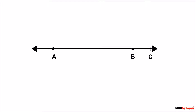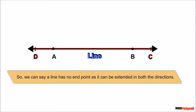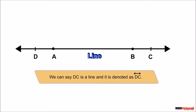Now if we extend the line indefinitely from a point in the opposite direction, we get a line. A line has no endpoint, as it can be extended in both directions. Here DC is a line and it is denoted by a line with a double arrowhead over the top of the letters.